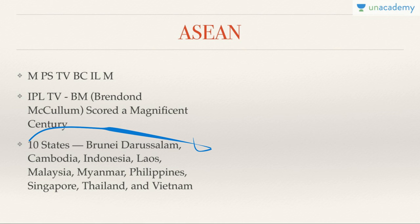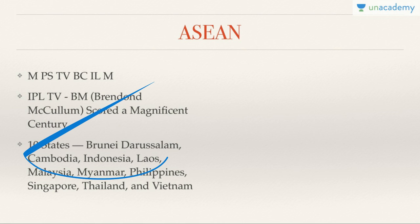By the way, China and India are not members. So C belongs to Cambodia, B to Brunei — not Bhutan, because it is not in Southeast Asia. How do you remember these initials? Just remember: 'IPL TV pe chal raha tha, first match mein Brandon McCullum scored a magnificent century.' I for Indonesia, P for Philippines, L for Laos, T for Thailand, V for Vietnam, B for Brunei Darussalam, M for Malaysia, C for century i.e. Singapore, M for Myanmar, and C for Cambodia.